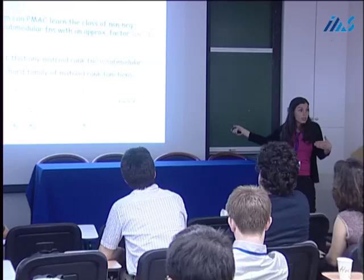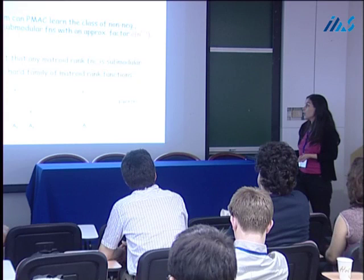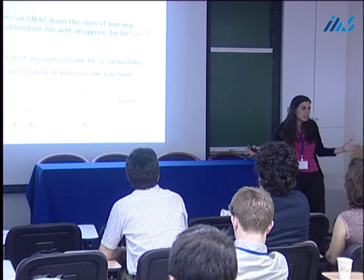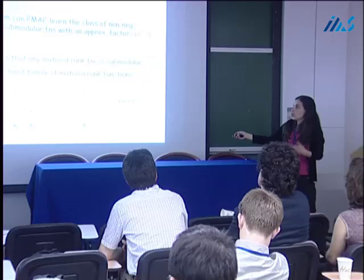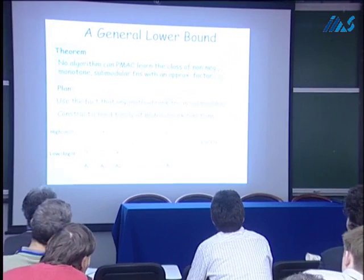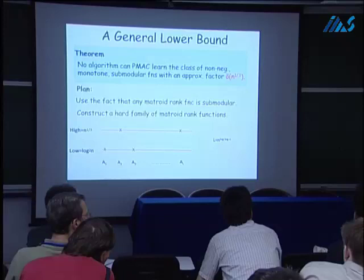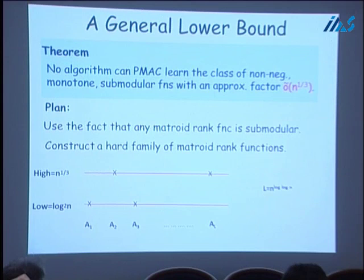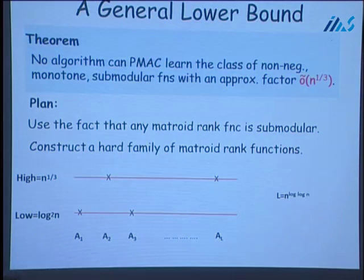Since L is super-polynomial, if the underlying distribution is uniform over these subsets and we only use a polynomial training sample, we're going to see less than 1 over poly fraction of them and do badly on most of the sets. We actually worked hard to get such a high gap here, and had to come up with a new family of matroids. None of the existing families of matroids gave a gap beyond a constant factor — for a while we were trying to prove a constant factor upper bound, but it turned out there is this lower bound.